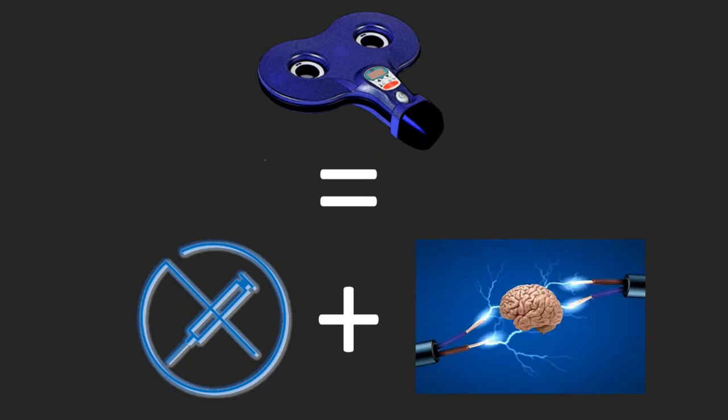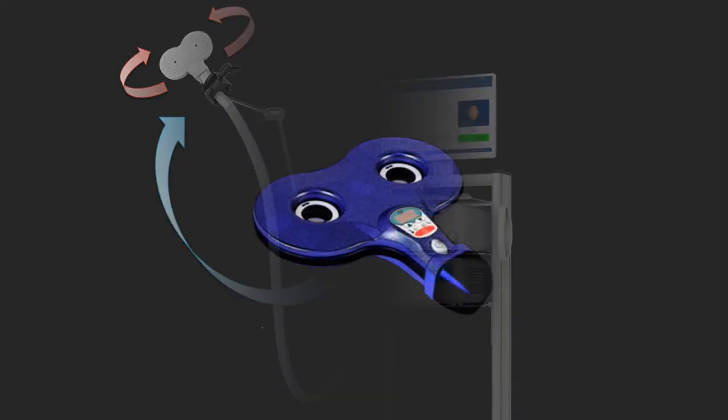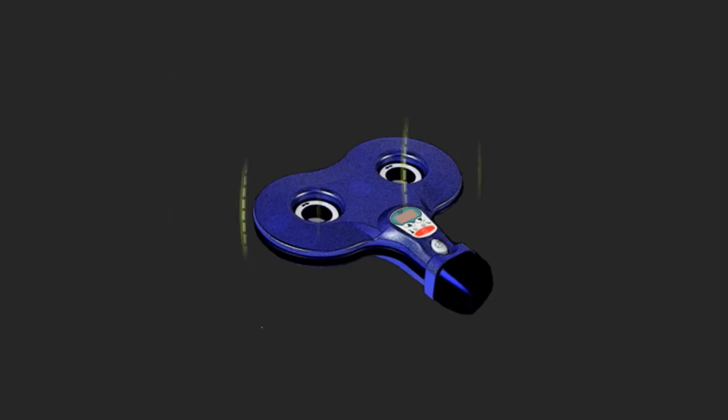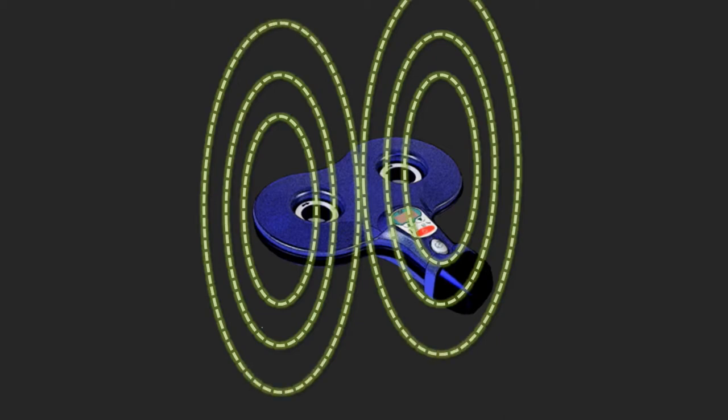So how does TMS work? A TMS machine sends a strong electric current to a coil. Within these coils there are wires in the shape of a circle, or a double circle, a so-called figure of eight. Maybe you'll remember from physics class that transmission of an electric current gives rise to a fluctuating magnetic field in the perpendicular direction. This is Faraday's law of electromagnetic induction.